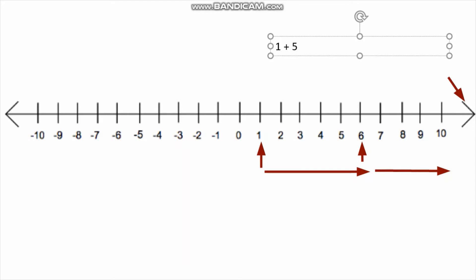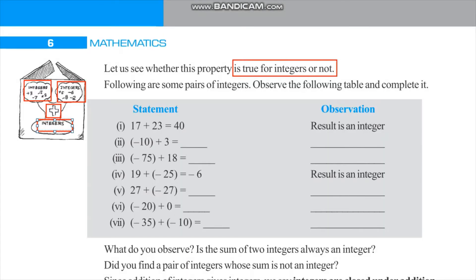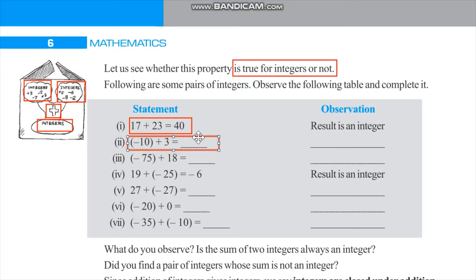This should give you an idea about why when you add two integers, you will always remain on the number line. Now let us look into some examples. Here we have been given a lot of examples starting with 17 plus 23 which is equal to 40 — plus 40 is an integer. Similarly, if you do the following according to the four rules that we have learned, you will get the result that the result will always be an integer. For this one, minus 10 plus 3: whenever we are adding a negative number to a positive number, we need to subtract the smaller number from the bigger number and keep the sign of the bigger number. In this case, the answer is going to be minus 7. Minus 7 is also an integer — it's a negative integer, but it is also an integer.